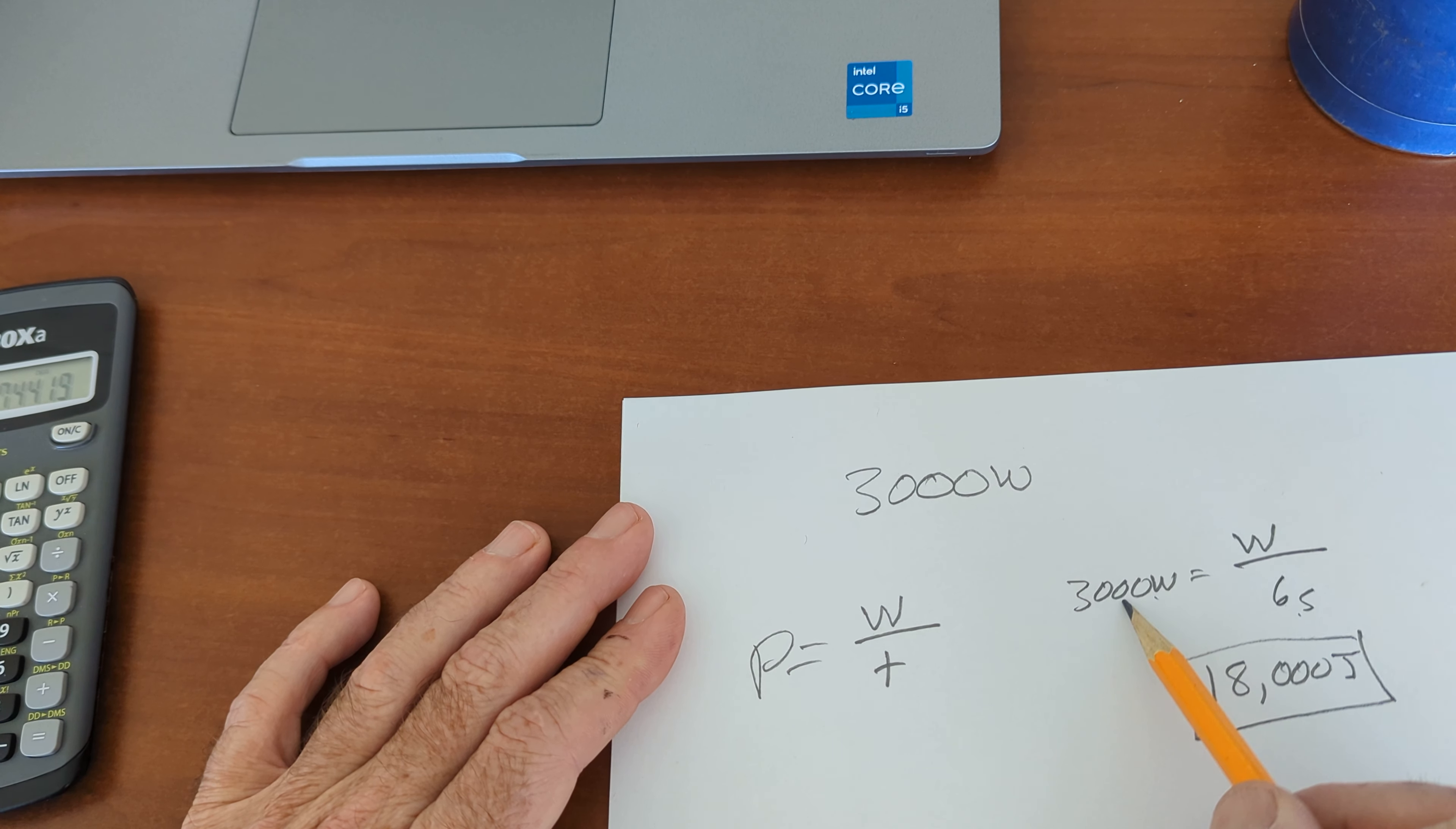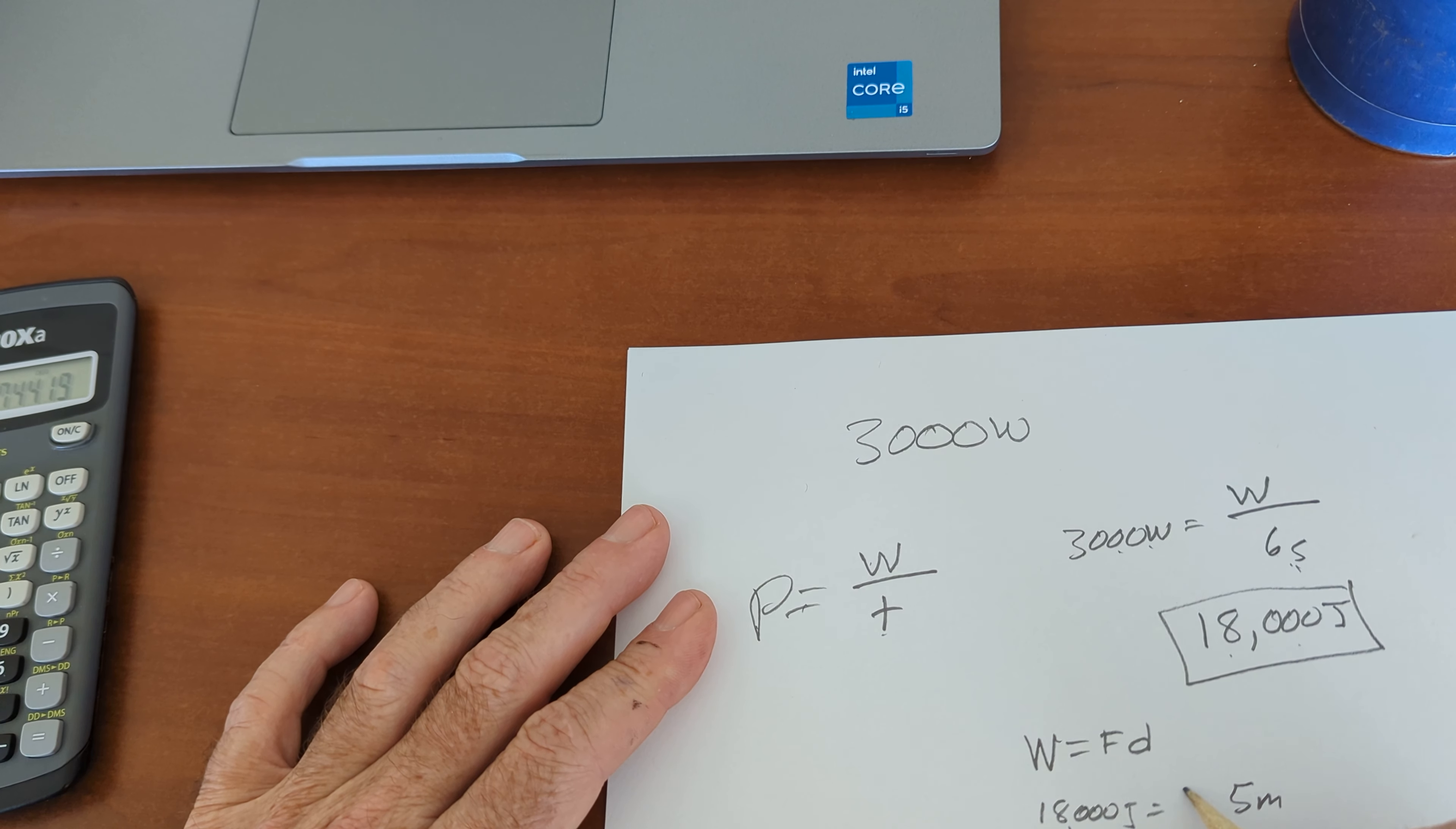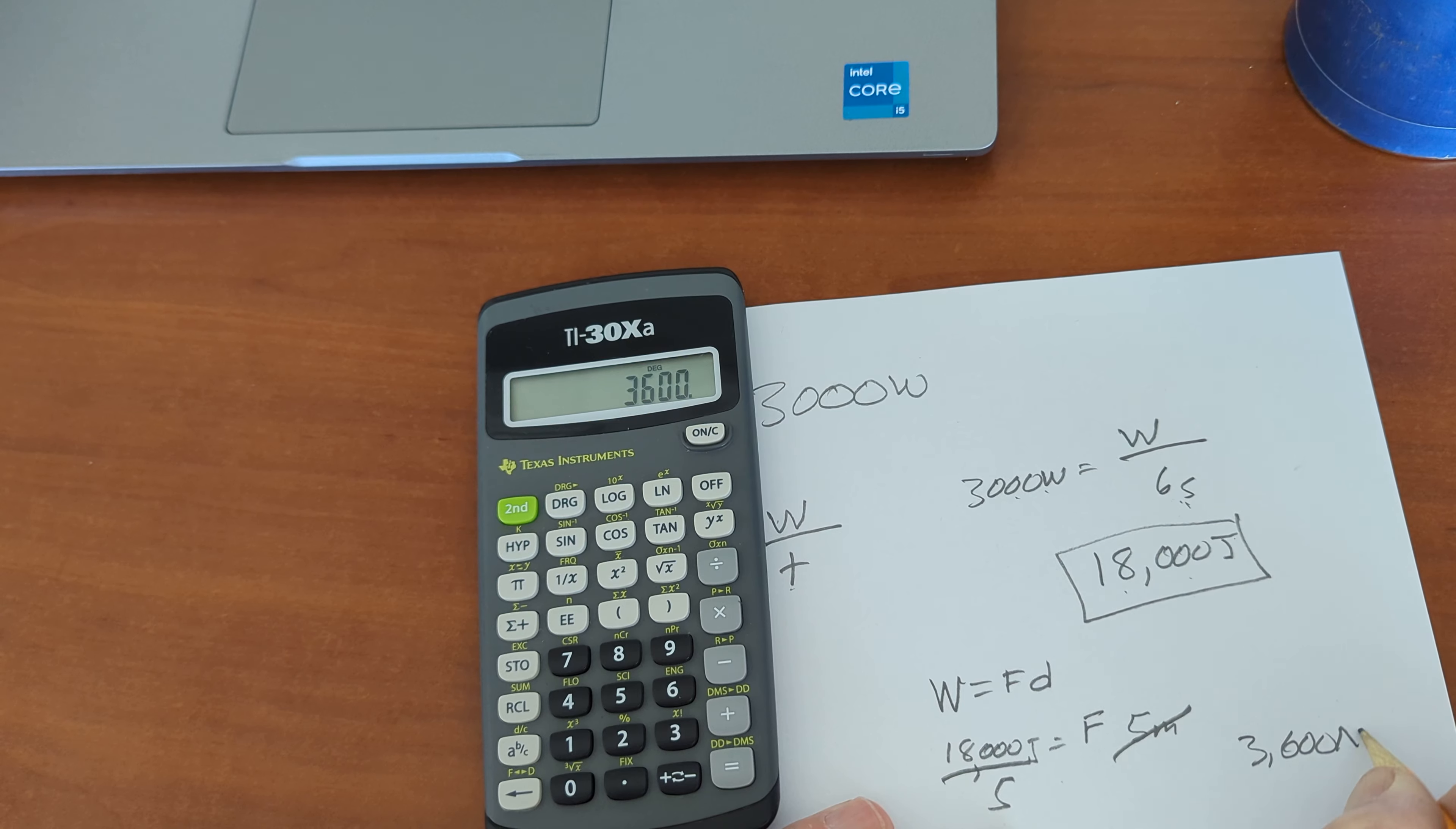If a 3,000 watt motor works for 6 seconds, because power is equal to work divided by time, it will do 18,000 joules of work if it's going wide open. So, what force was applied to the box? Now we know work is equal to force times distance. 18,000 joules were applied to a box, and it was moved for a distance of 5 meters. So, how hard did it push on the box? 18,000 divided by 5. 3,600 newtons. That's how hard it pushed on it.